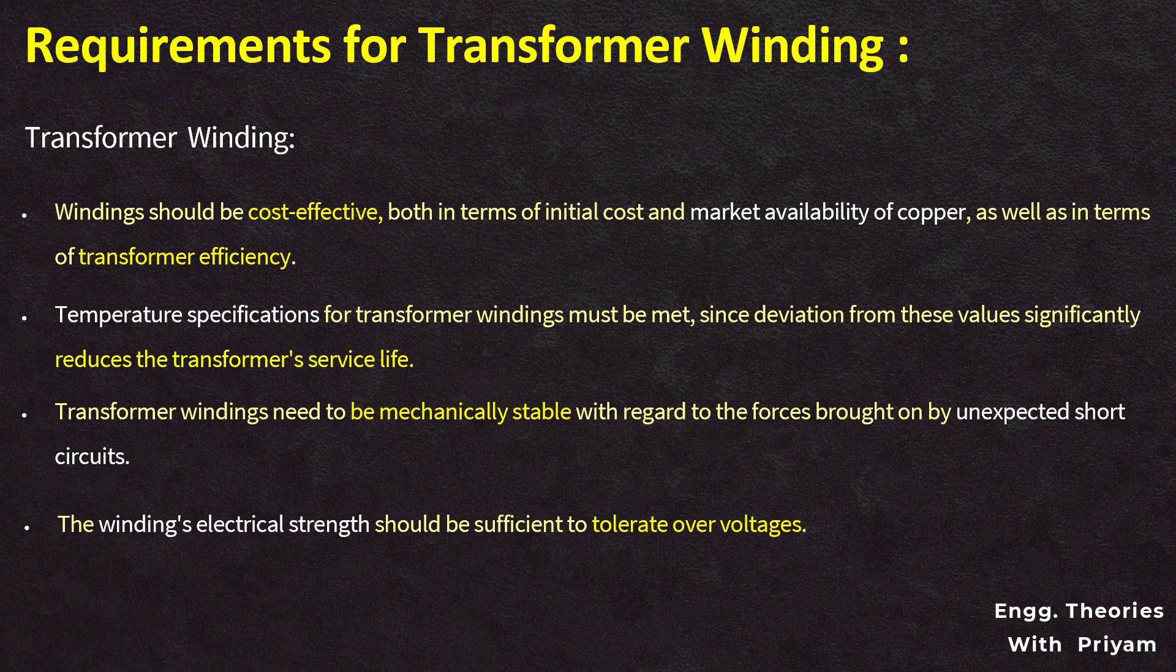The winding's electrical strength should be sufficient to tolerate over-voltages. These criteria often run counter to one another. For instance, a higher current density in the winding results in less copper being used, which causes copper loss or I-squared-R losses to rise and the efficiency of the transformer drops. Allowing a greater temperature rise in the winding results in a smaller transformer but a shorter service life. As a result, it is crucial to carefully plan the winding of a modern transformer, particularly when it comes to high-voltage transformers.